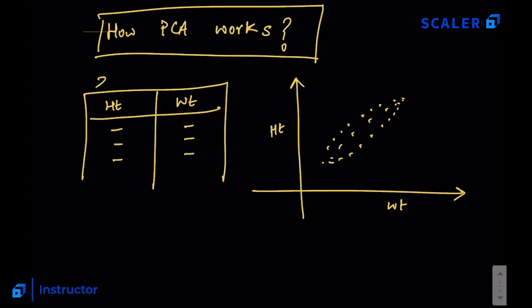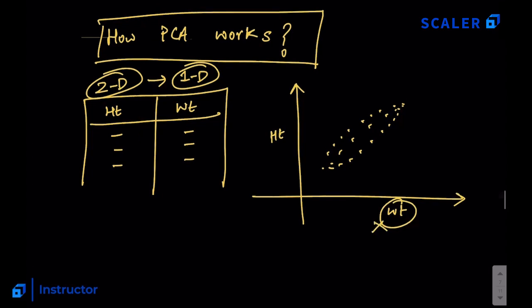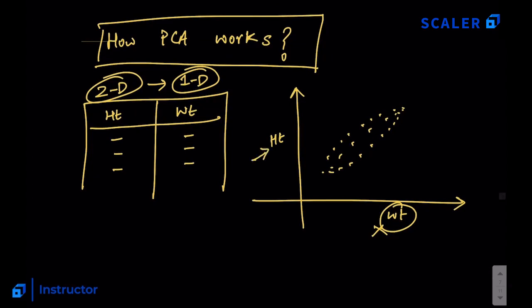This is our two-dimensional data. To reduce the dimensionality of 2D data we can only go down to one dimension. The goal for PCA here is to reduce dimensionality from two to one. One naive solution that comes to mind is to simply get rid of the weight variable, leaving only the height dimension.